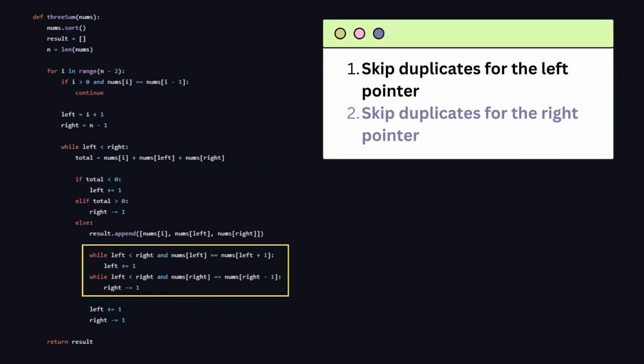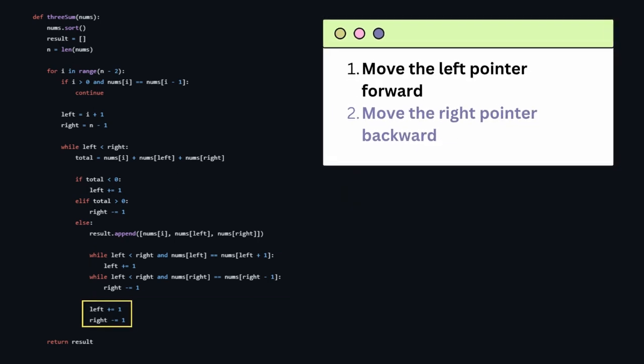In the else statement, we have to make sure we don't have duplicates for the left and right pointer. And finally, we move the left pointer forward and the right pointer backward, and return.